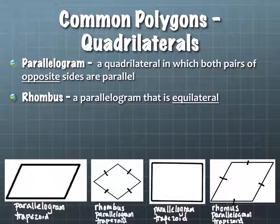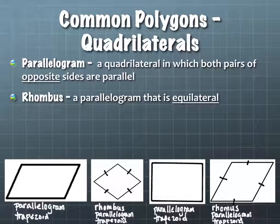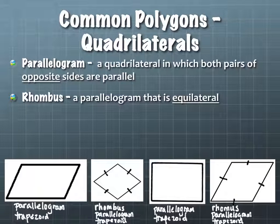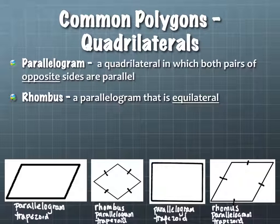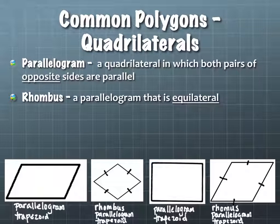In fact, the third one — where we wrote parallelogram and trapezoid — we could also write rectangle once we confirm that. And if we had the shape of a square, we'd have even more descriptors for it.